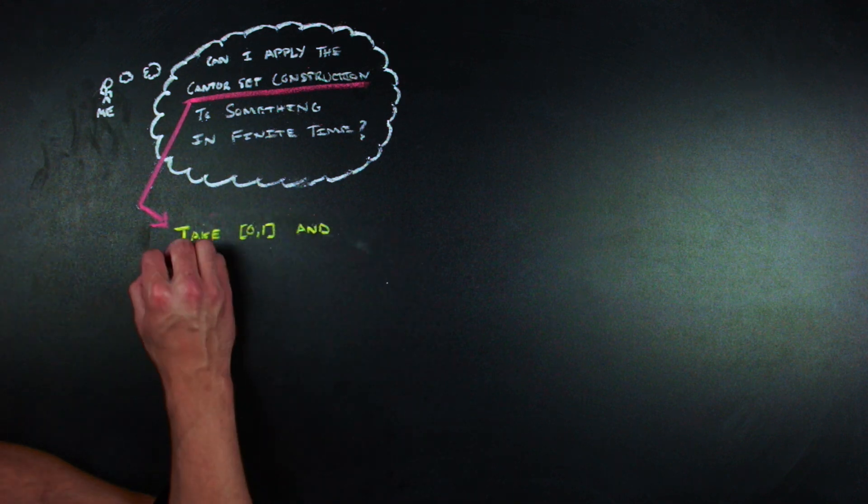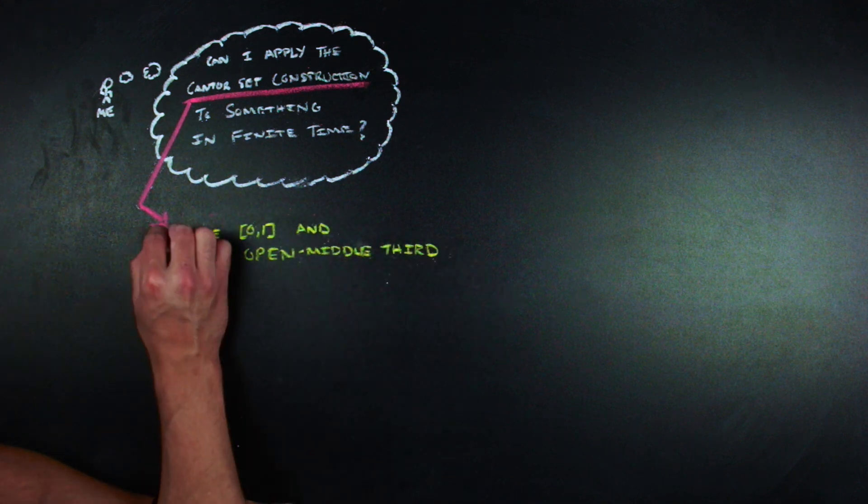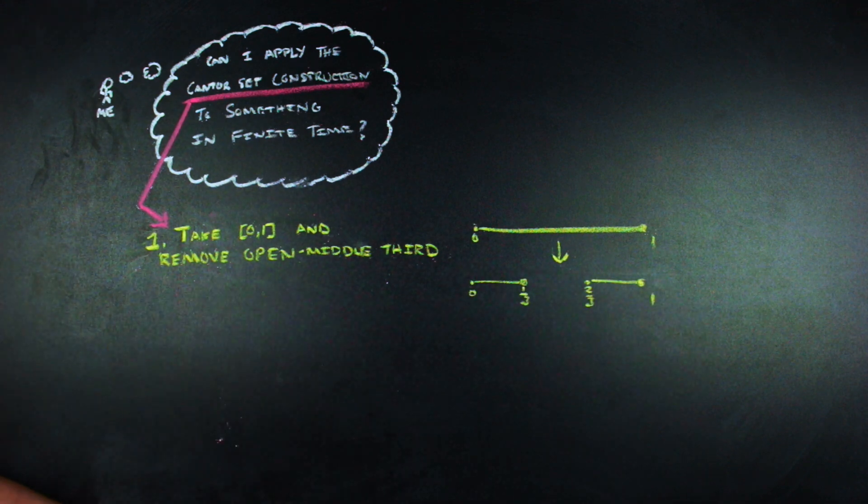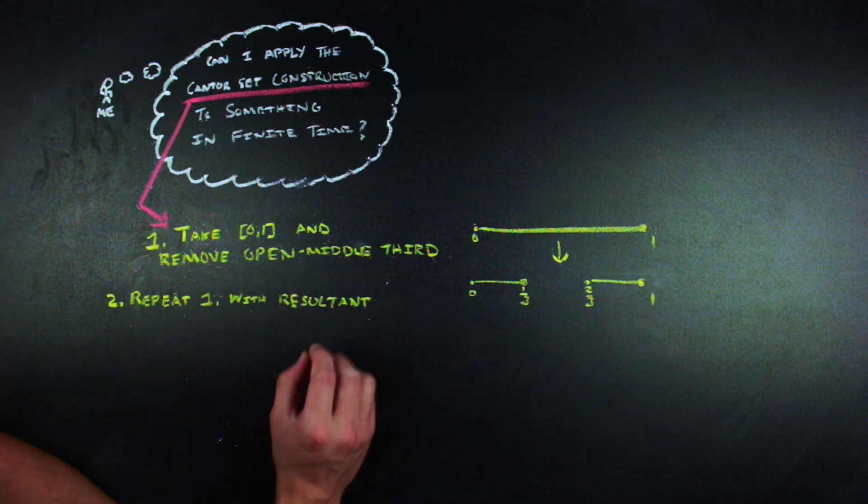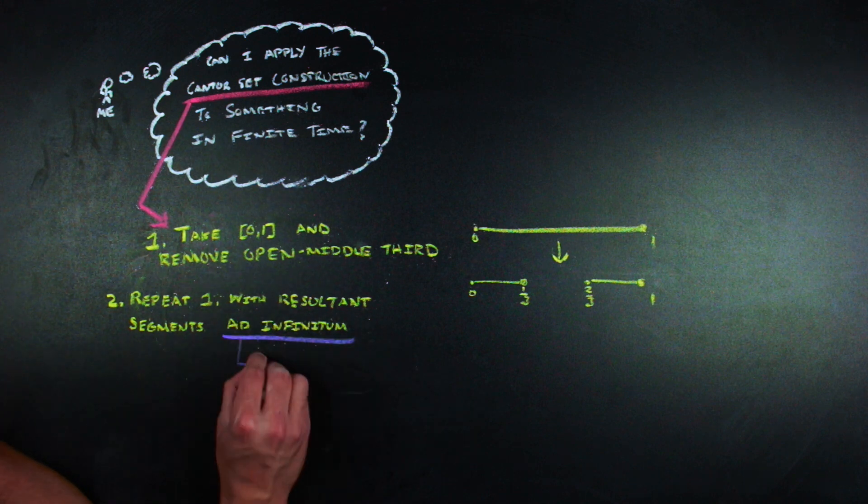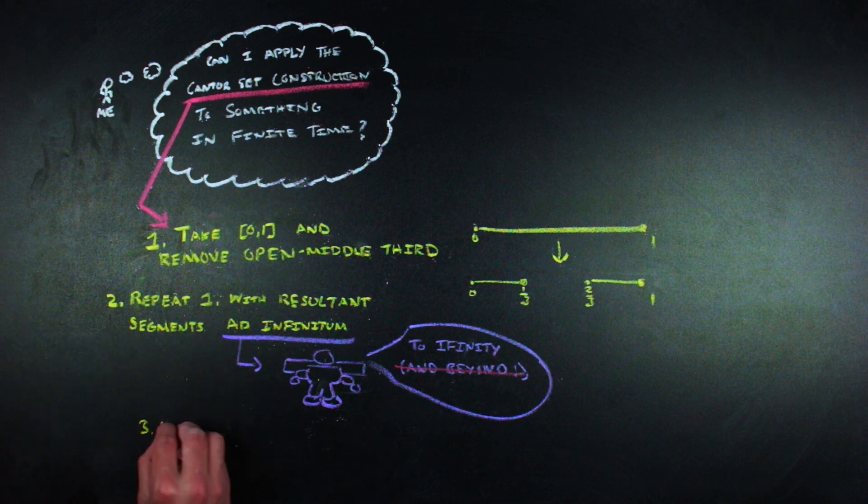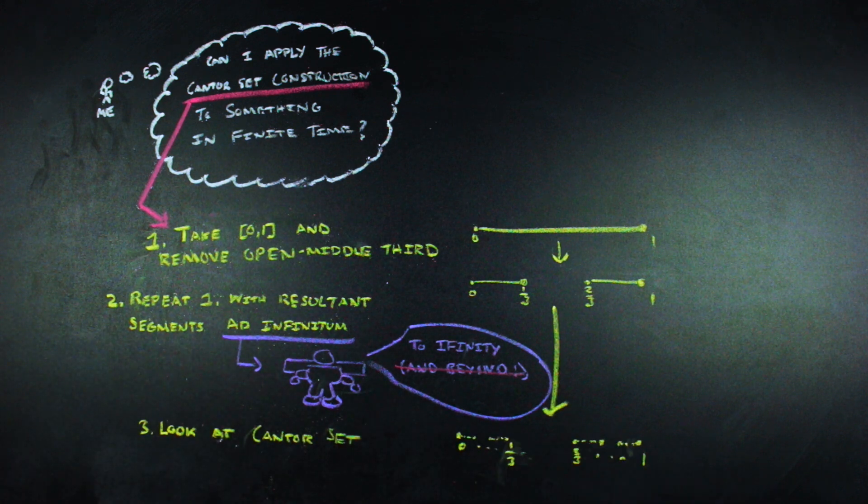One, take the closed segment from zero to one, and remove the open middle third from one-third to two-thirds. Two, we're just going to repeat step one with the resultant segments ad infinitum, or follow Buzz Lightyear's tagline to avoid the Latin here. And three, then you have a Cantor set to look at after you've done that infinitely many times.